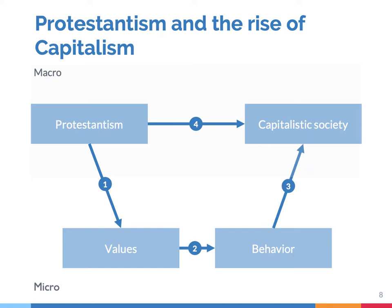And then finally, as a result of this changing behavior, a capitalist society emerged — that's arrow 3. In summary, Weber proposed causal statements linking the macro and micro level. It's a very nice example of a multilevel framework in which causal explaining and subjective understanding are combined.